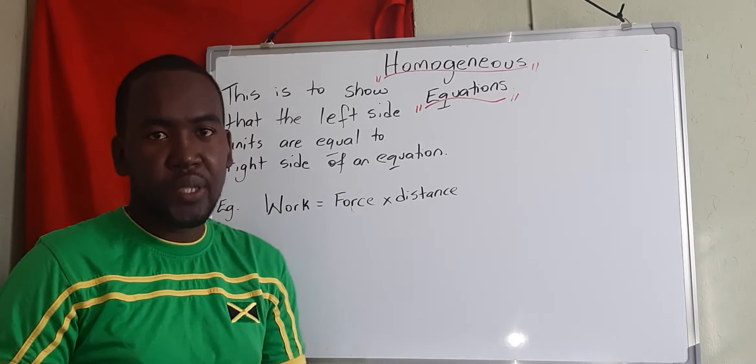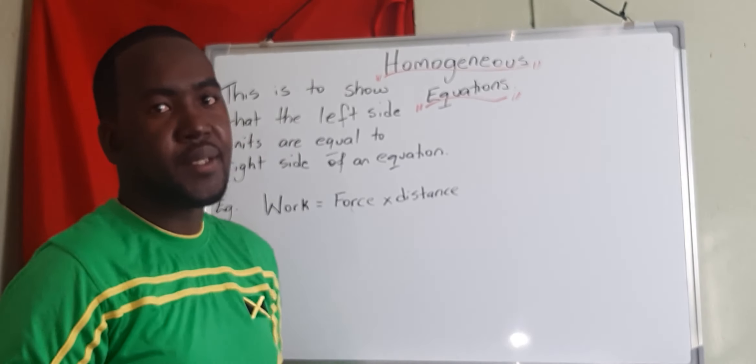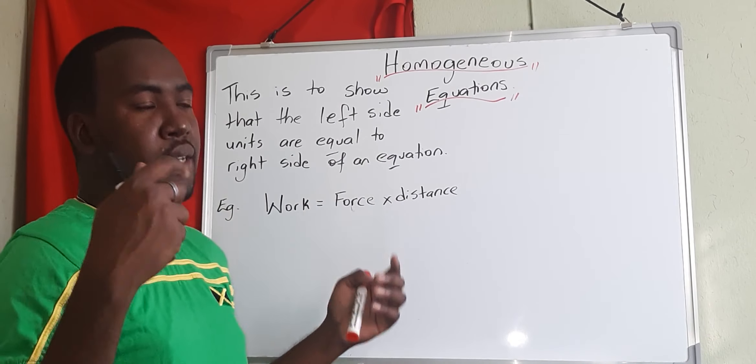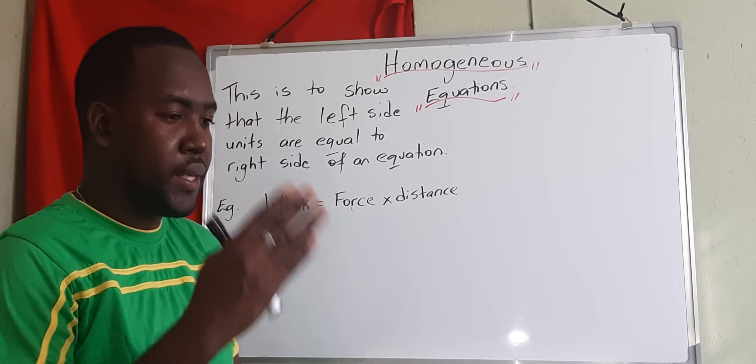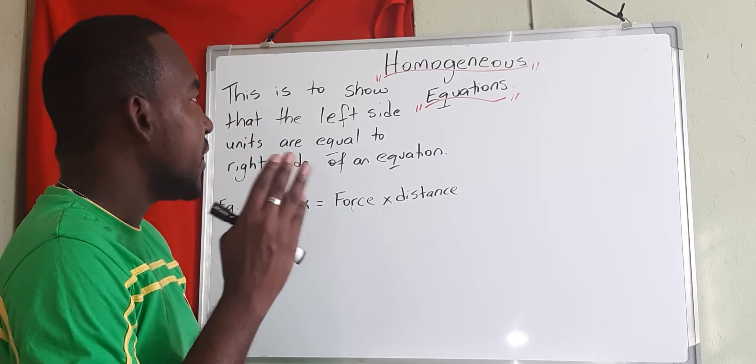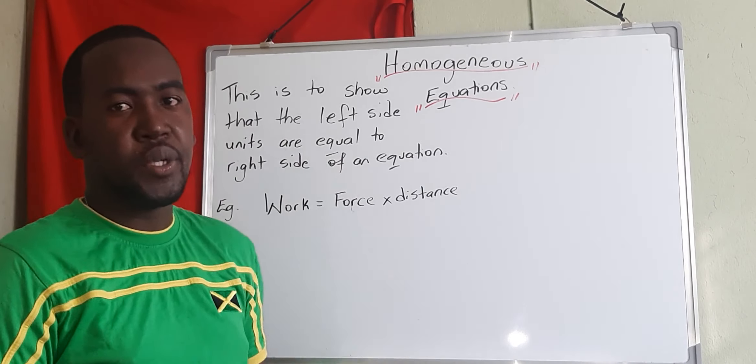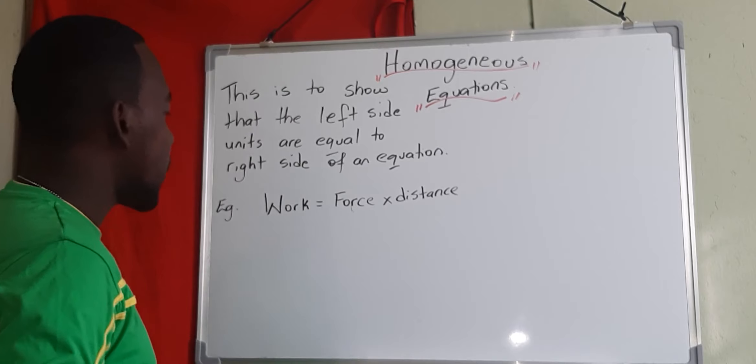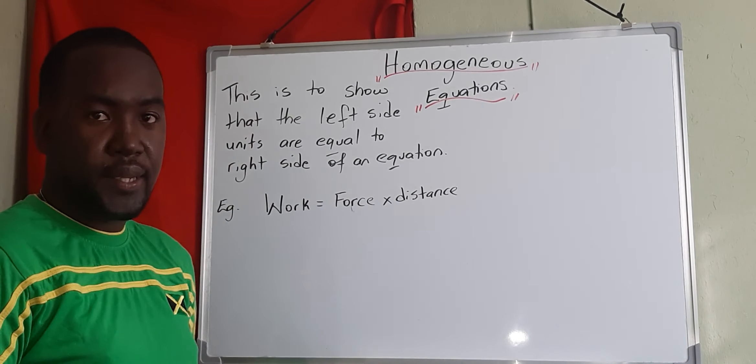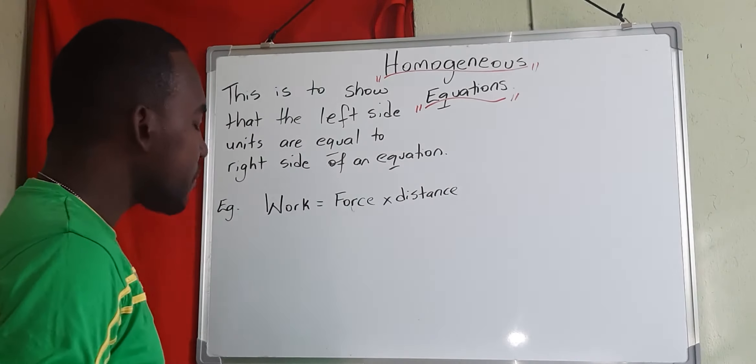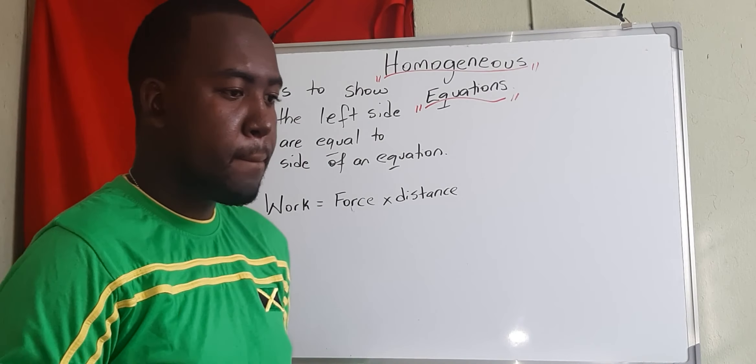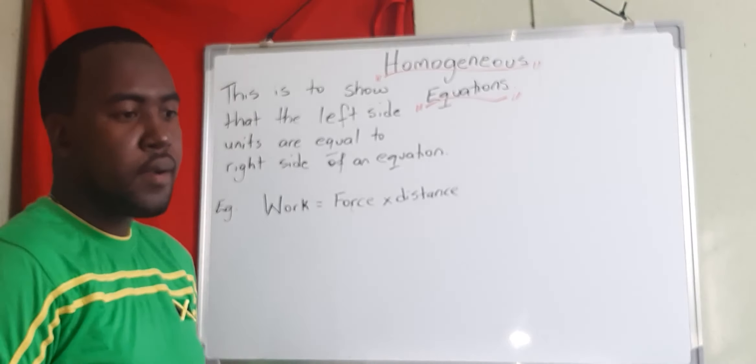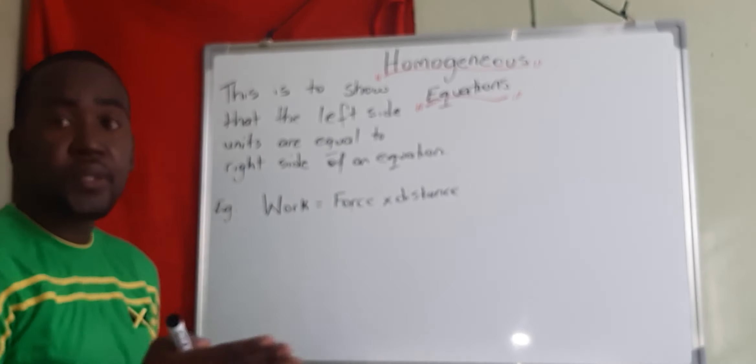Homogeneous equations in physics is very important because it tells us that the left side of the equation units equal to the right side of the equation units to make them balanced. This is ensuring that unit on both sides of the equation is also balanced. So let's look at work. Work is force times distance.